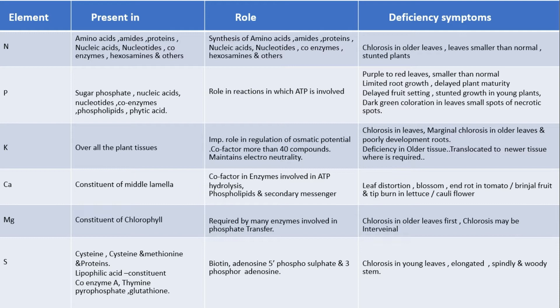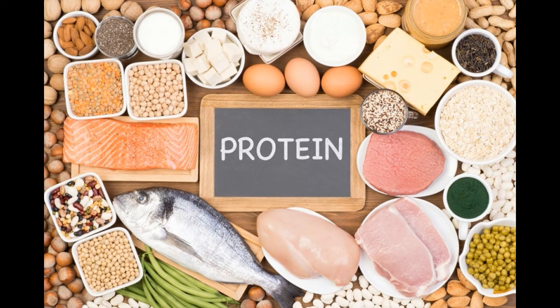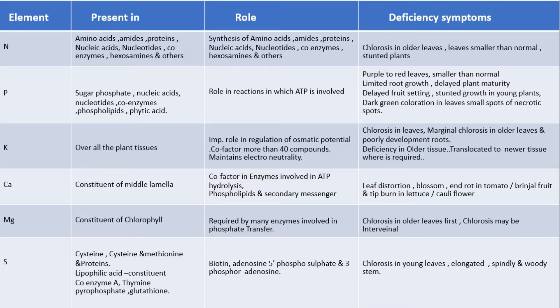The first element, which is very important, is nitrogen — present in amino acids, amides, proteins, nucleic acids, nucleotides, coenzymes, hexosamines, and others.